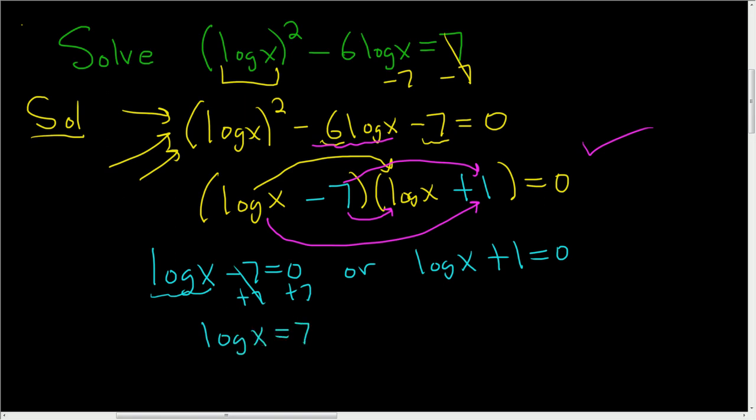Now there's a formula. It says that if you have b to the log base b of x, you just get x. So for example, 10 to the log of 4 is 4. There's really a 10 here when we write the log. We just don't write it.